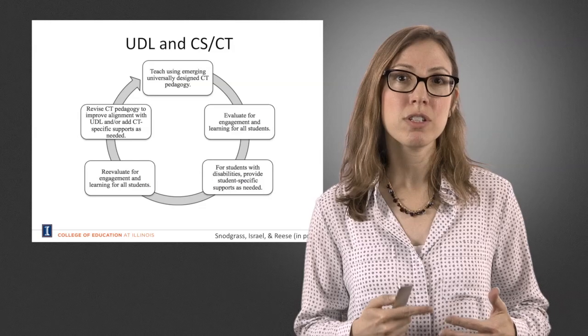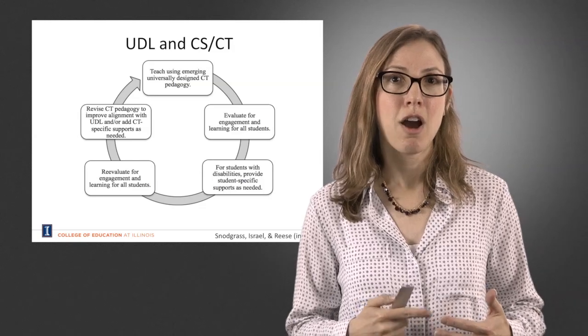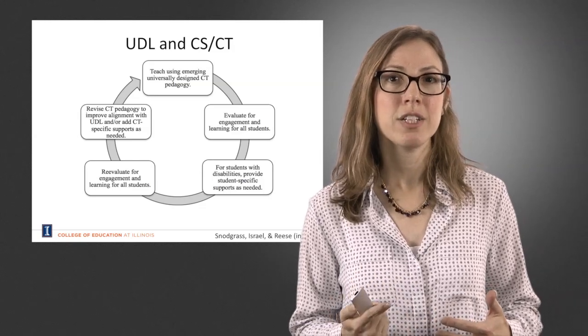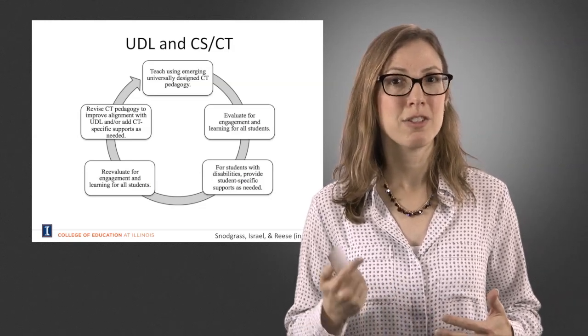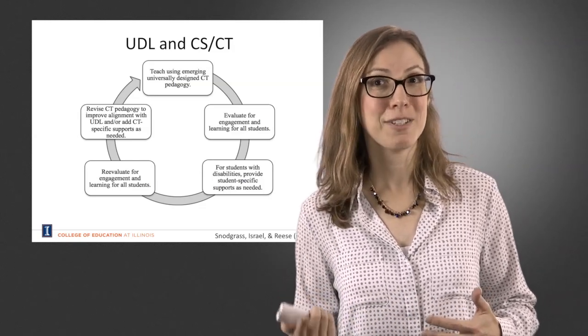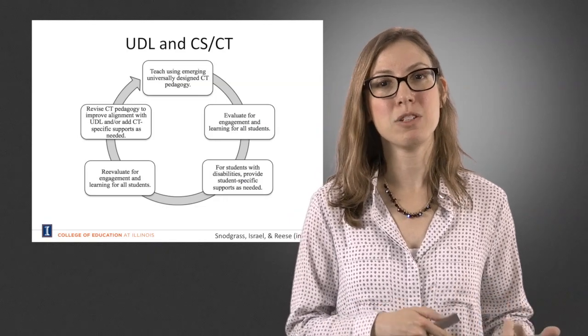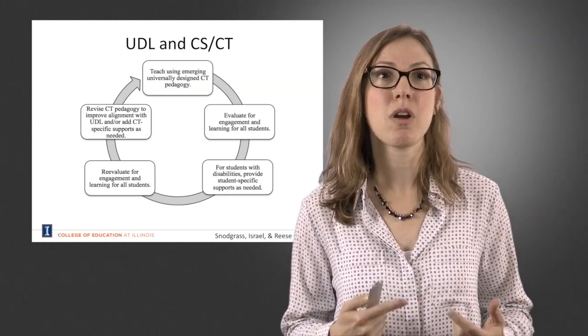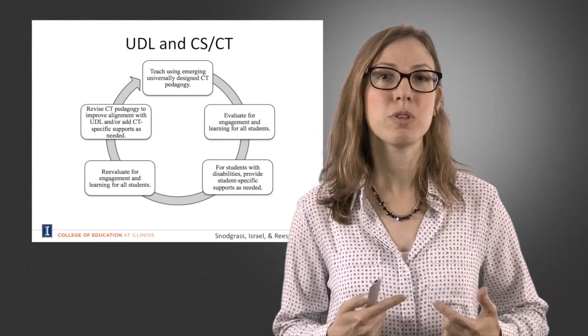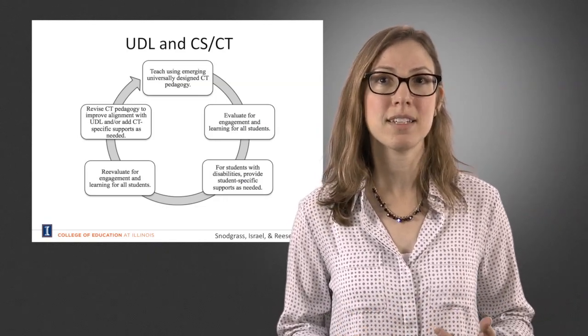So the idea is: if a student is struggling, our first inclination should not be that they can't do it. It should be — what is it that we can do on top of what we're already doing to increase access and engagement?